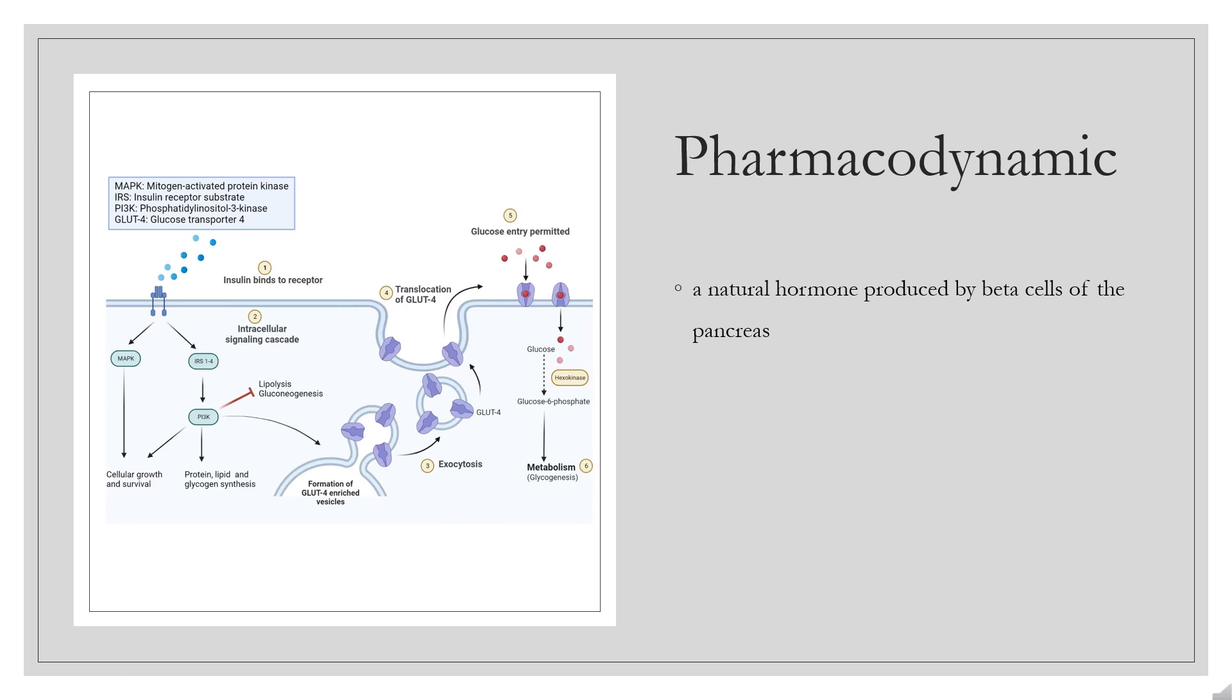Insulin increases DNA replication and protein synthesis by stimulating amino acid uptake by muscle and adipose tissue, and modifies the activity of numerous enzymes involved in glycogen synthesis and glycolysis. Insulin also promotes growth and is required for the actions of growth hormone, e.g., protein synthesis, cell division, DNA synthesis.